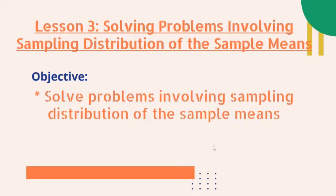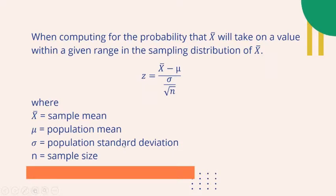Our objective is to solve problems involving sampling distribution of the sample means. If you remember, we briefly discussed the central limit theorem in our last chapter on normal distribution. The central limit theorem is of fundamental importance in statistics because it justifies the use of normal curve methods for a wide range of problems.